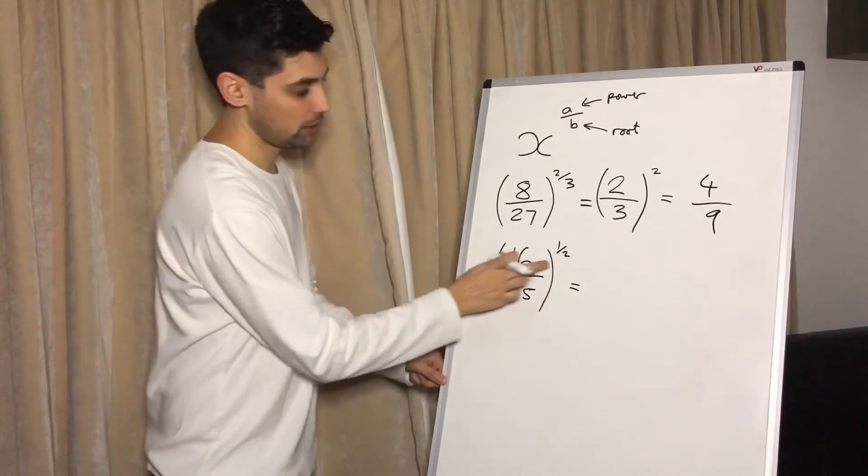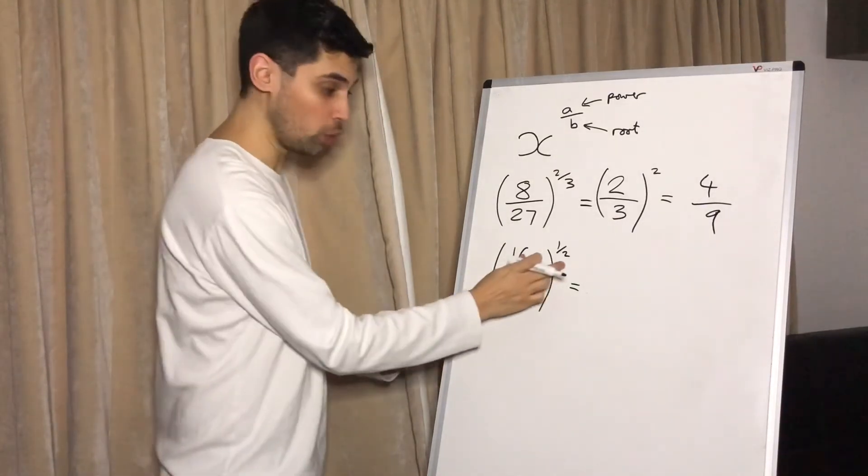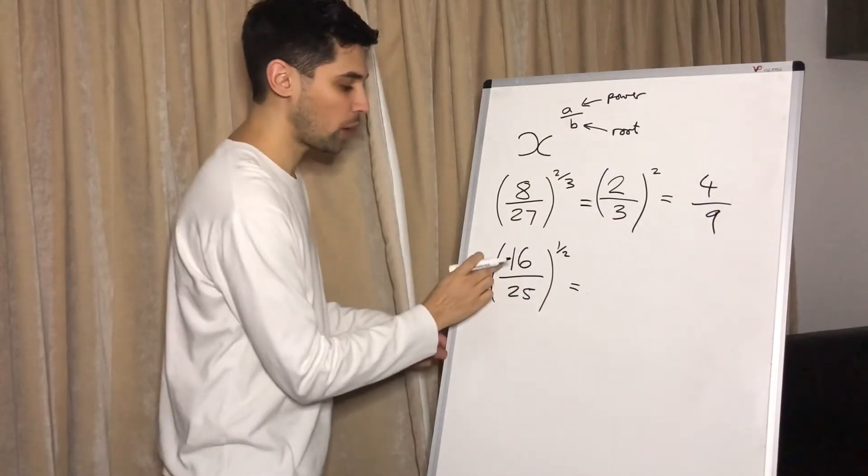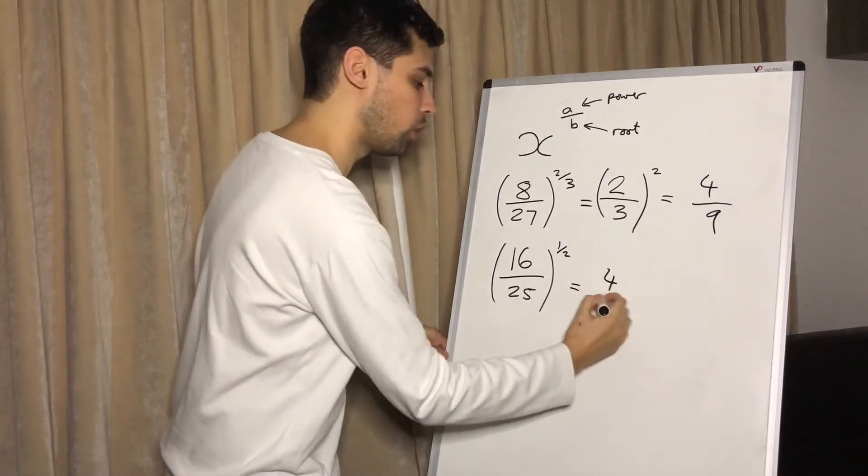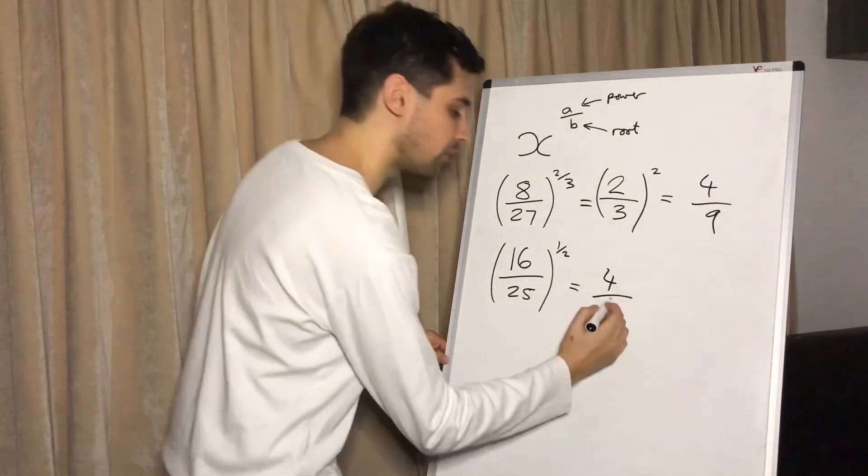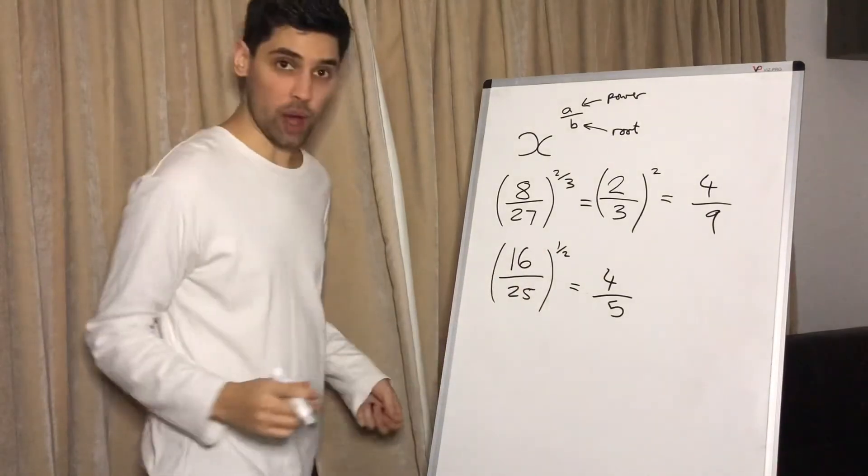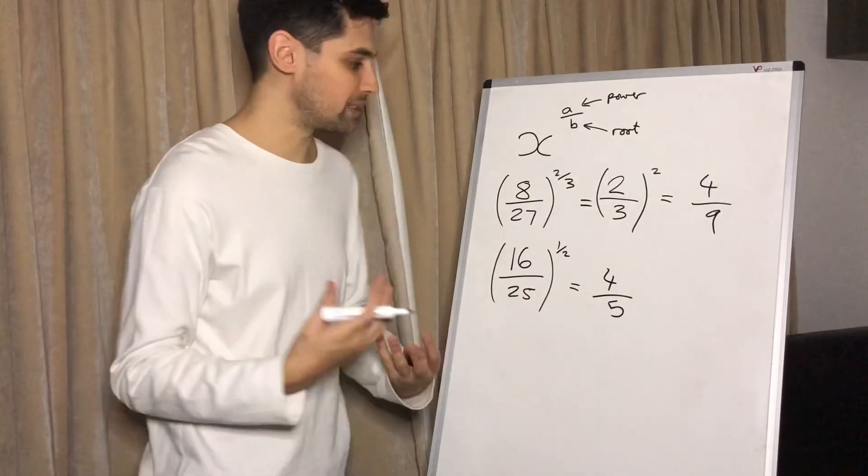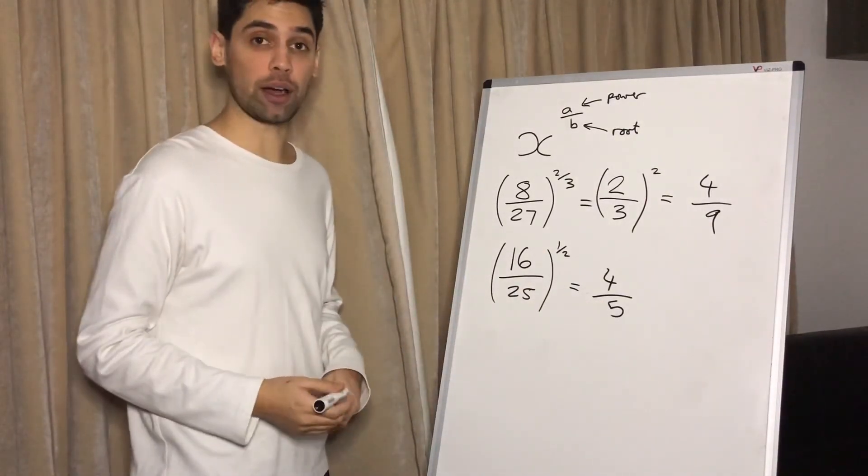Now same thing here. The square root because it's a two underneath. Square root of sixteen is four and square root of twenty-five is five. Now because the power on the top is a one, anything to the power of one just stays the same. So we're happy with that being our final answer.